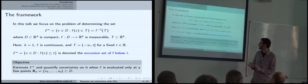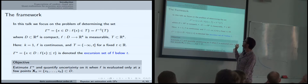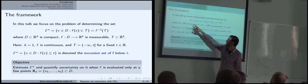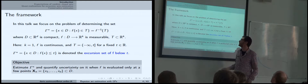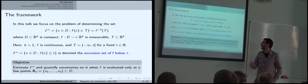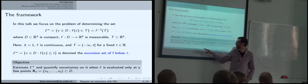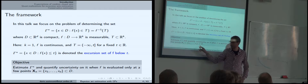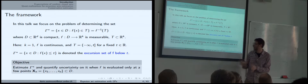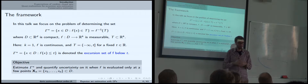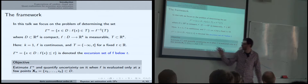The framework is something we've seen the whole week. What's different is the objective. What I'm interested in is recovering these types of sets. Here we have f, a function which we assume is expensive to evaluate, and we only know it at a certain number of points, denoted throughout the talk as x1 through xn. For most of the talk, I'm going to keep a fixed design — no sequential aspect. Towards the end, if time allows, I'd love to talk a bit about the sequential aspect.